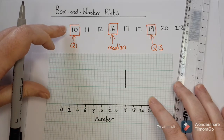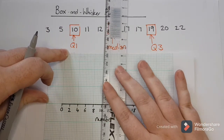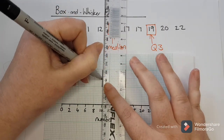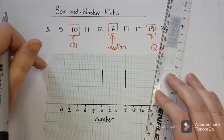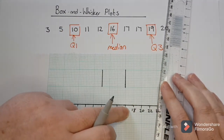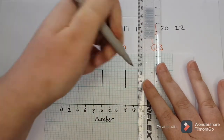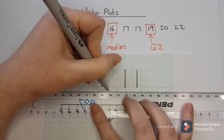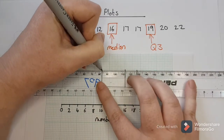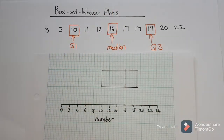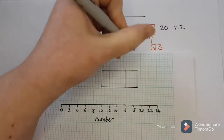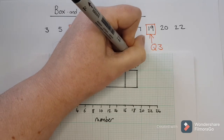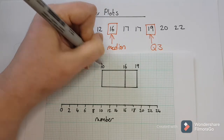Then I'm going to do the same thing for my lower quartile at 10. So I find where 10 is and draw a line the same length along there, and my upper quartile of 19, which is just going to be in the middle there. I draw my line, and then I connect the box. So that is the box part of the box and whisker — the median at 16, lower quartile at 10, and upper quartile at 19.